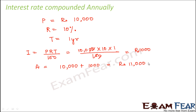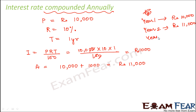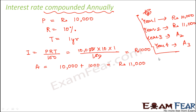Since the interest is compounded annually, for year number one your principal amount remains 10,000. For year number two your principal will change and become equal to the amount of year one, which is 11,000. Similarly, for year number three your principal will change to the amount of year two, and for year number four your principal will equal the amount of year three, and so on. This is what we mean by interest compounded annually.